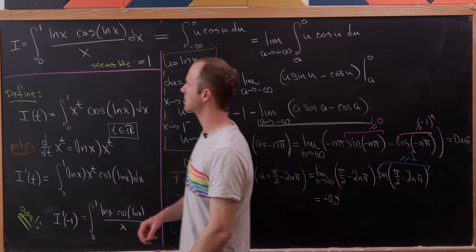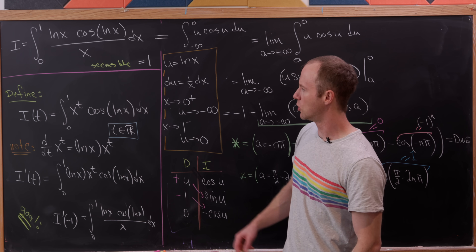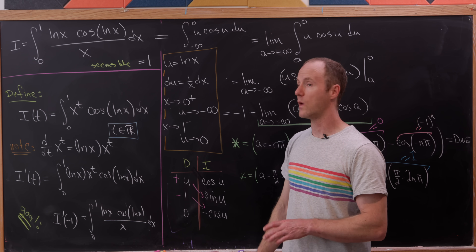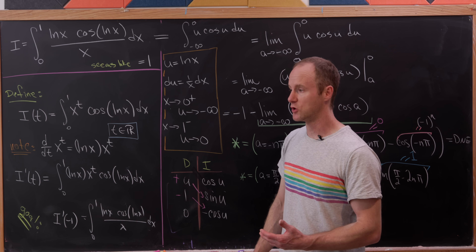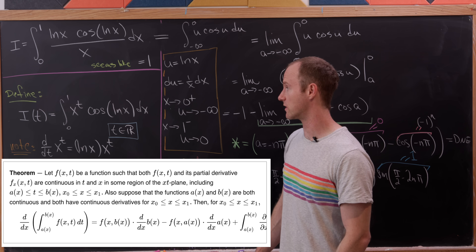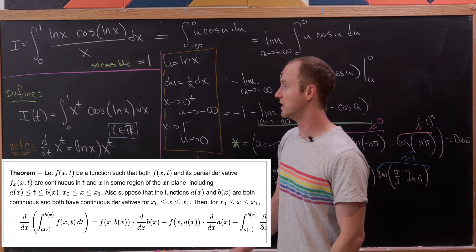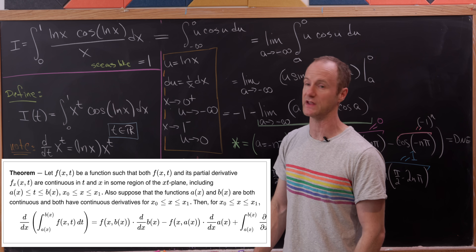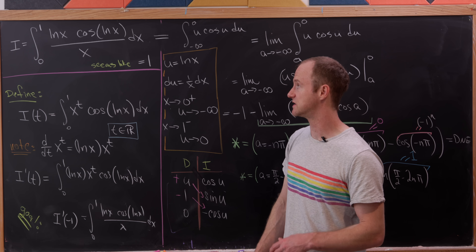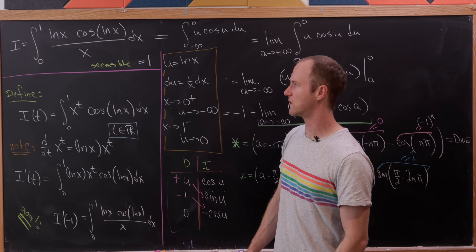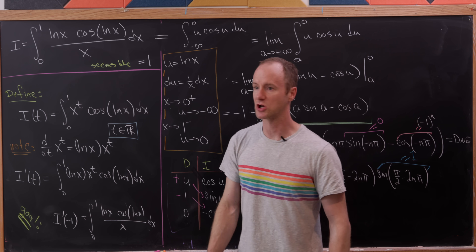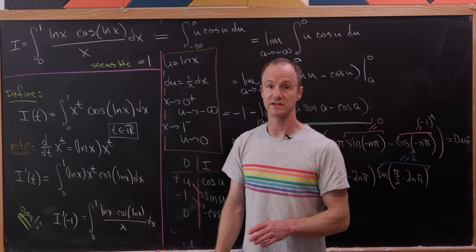So what happened? Why did the Feynman's trick technique not work? Because we didn't satisfy the hypotheses of the theorem allowing us to take the derivative under the integral sign. Those hypotheses had to do with the function being continuous on the closed interval. And that's a good place to stop.